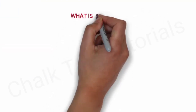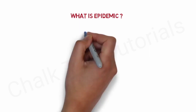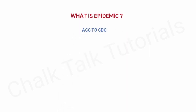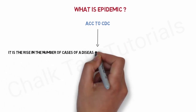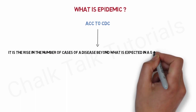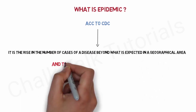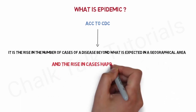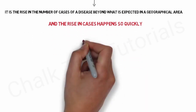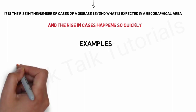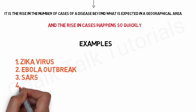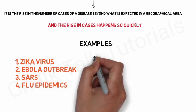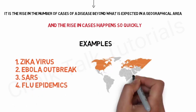What is an epidemic? According to the CDC, an epidemic is a rise in the number of cases of a disease beyond what is normally expected in a geographical area, and the rise in cases happens very quickly. Some important examples of epidemics include the Zika virus, Ebola virus outbreak, SARS, and flu epidemics. They are not pandemics because they are restricted to a specific geographic location or area.